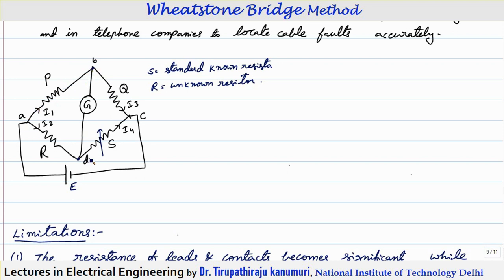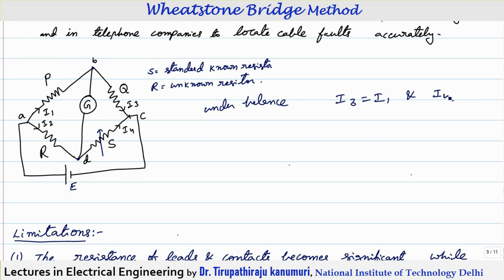These two branches are equivalent to a parallel combination because the potential is the same. Similarly, the potential difference between B and C equals the potential difference between D and C. Under balanced conditions, I3 equals I1, because whatever current arrives at the junction must leave it; no current passes through the galvanometer. Likewise, I4 equals I2, VAB equals VAD, and VBC equals VDC.